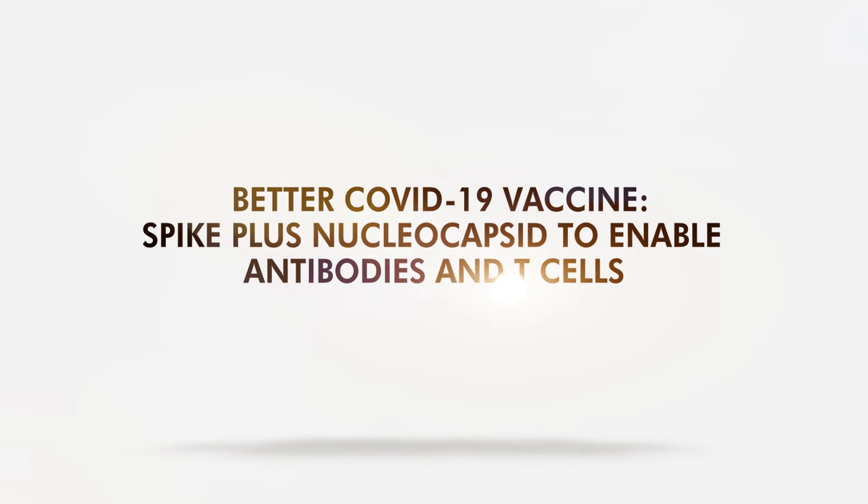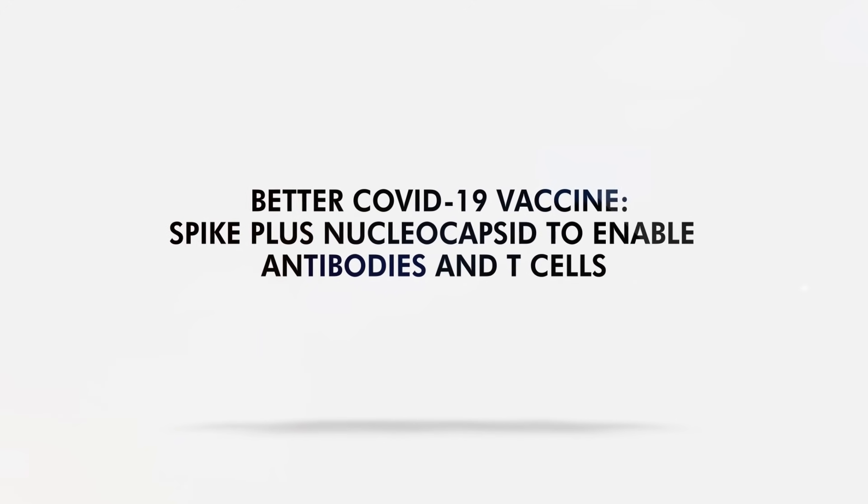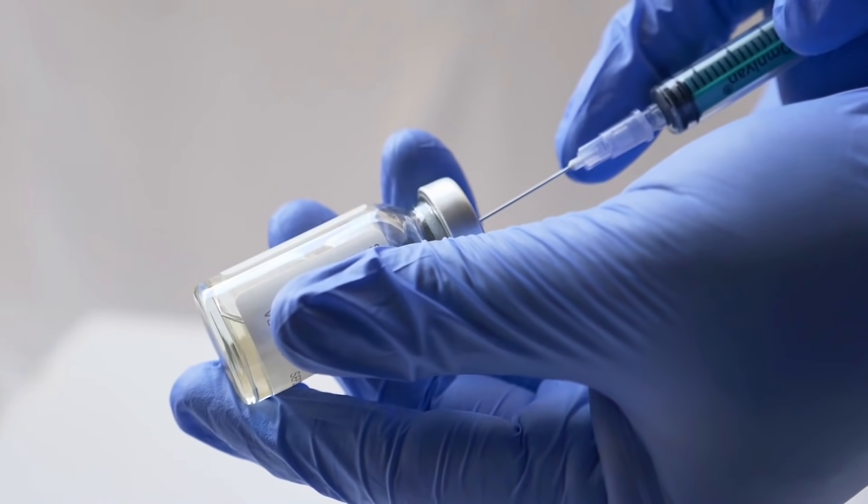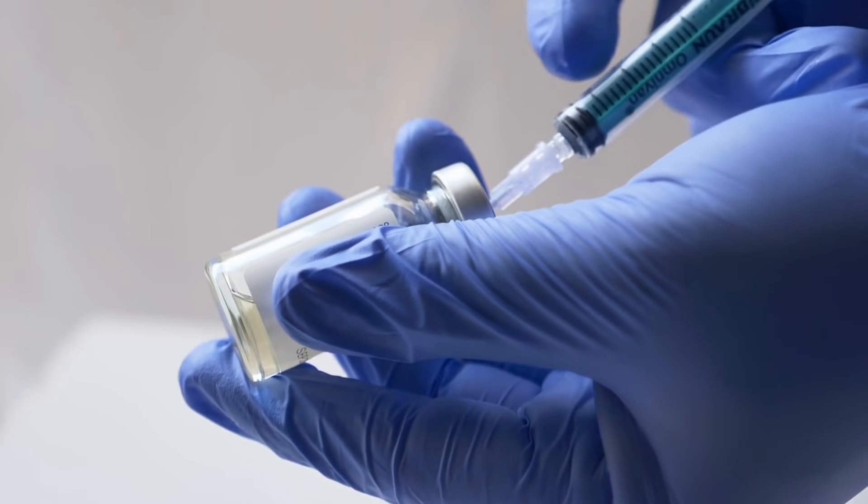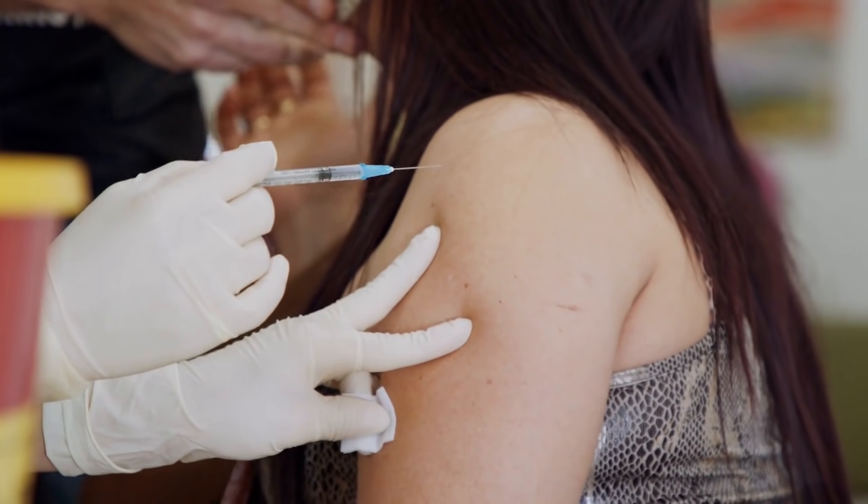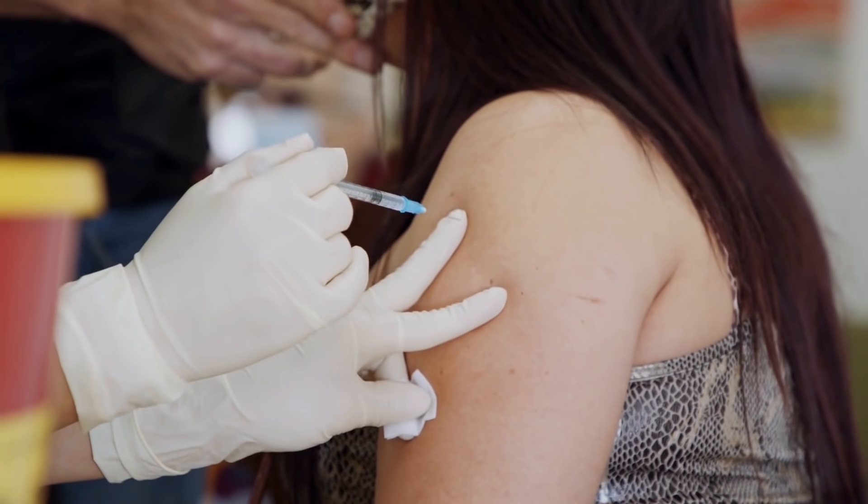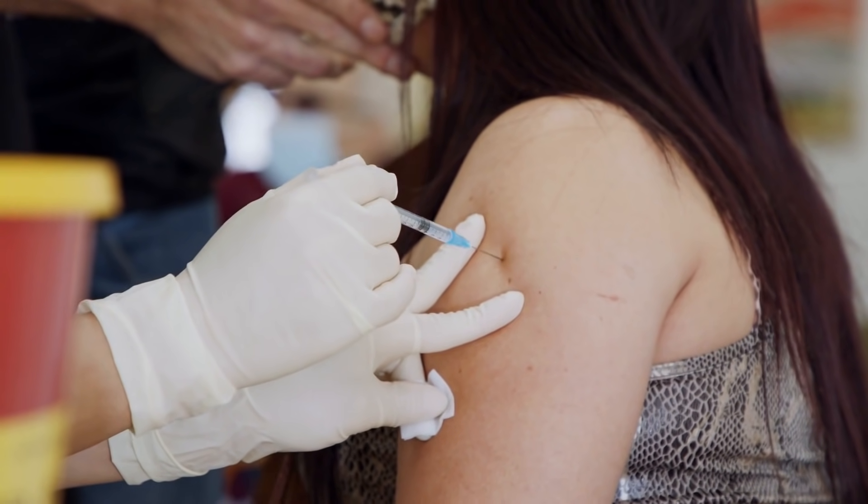Better COVID-19 vaccine: spike plus nucleocapsid to enable antibodies and T-cells. Current COVID-19 vaccines are targeting the spike protein of the coronavirus. This technique has proven effective in protecting people from severe disease, yet there is room for improvement.